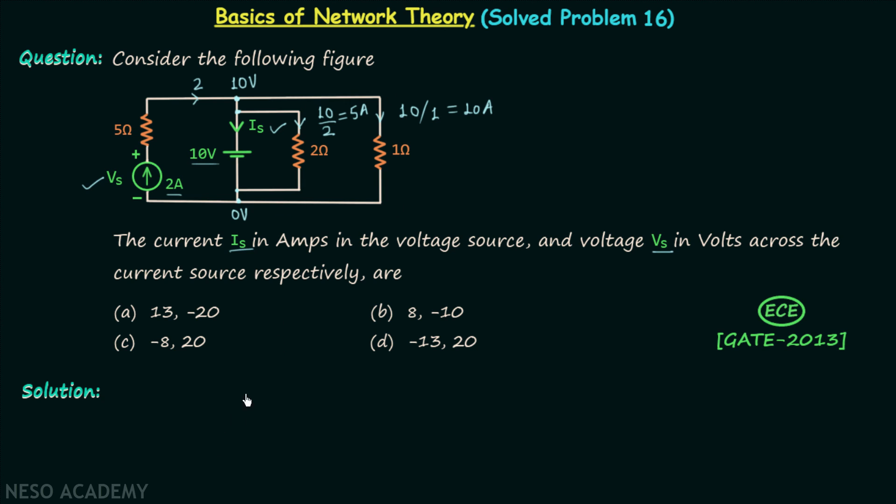Now it is very easy to calculate current Is. We simply need to apply KCL at this node. 2 amperes is the entering current. Is is the leaving current. 5 amperes is also the leaving current and 10 amperes is also the leaving current. So 2 amperes will be equal to Is plus 5 plus 10. And from here we will get current Is equal to minus 13 amperes, and therefore option D is the correct option. We will calculate voltage Vs.